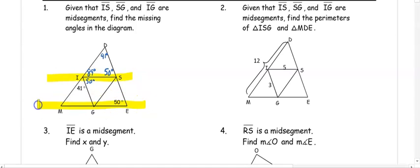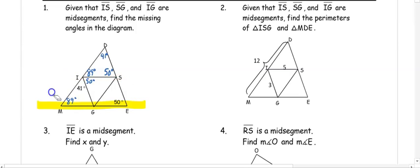Using these parallel lines, we have a corresponding angle of 89, and by angle M is also 89. The angle missing in that triangle, then, is 50 degrees.